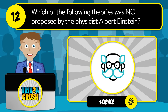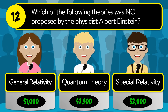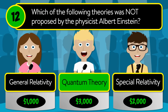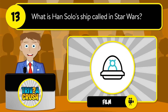Question number twelve: which of the following theories was not proposed by physicist Albert Einstein? Was it general relativity, quantum theory, or special relativity? The correct answer is quantum theory.